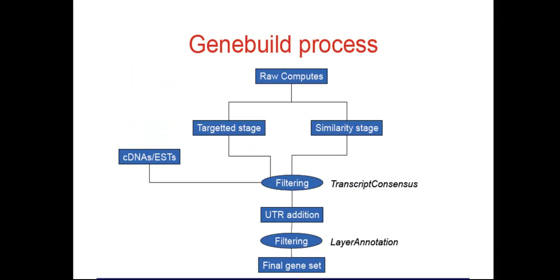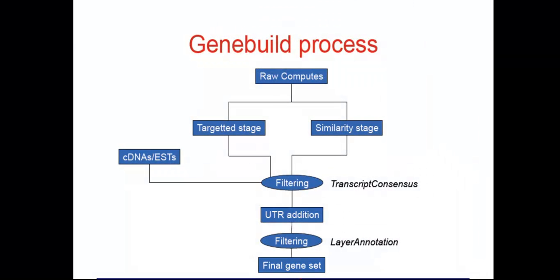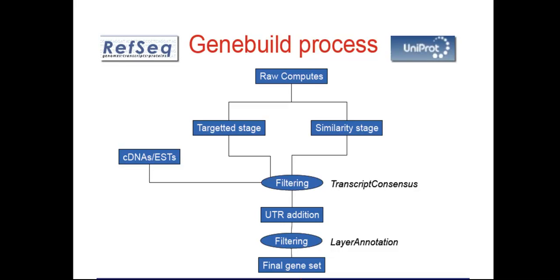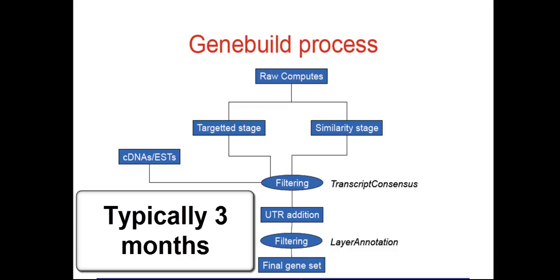Our standard Ensembl gene annotation system aims to annotate full-length protein coding genes in a species. The annotation process mimics manual curation in that we collect protein and cDNA sequences from public databases like NCBI, RefSeq, and Uniprot. We align these sequences to the genome and build gene models. It's a complex process that takes about three months for each species.